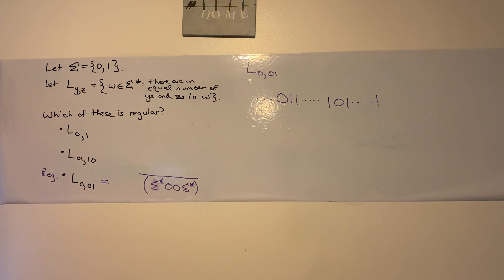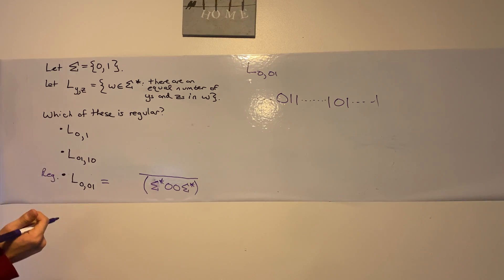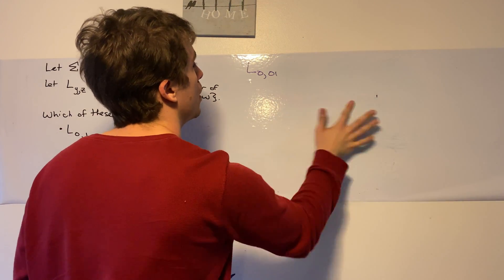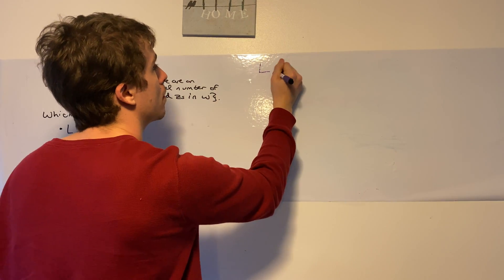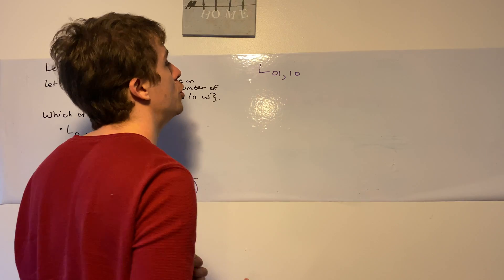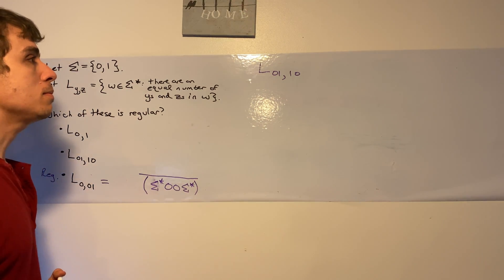So now let's tackle the next one, which is the same number of 0, 1s and 1, 0s. So how are we going to tackle this one? So the same number of 0, 1s and 1, 0s.